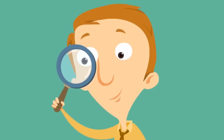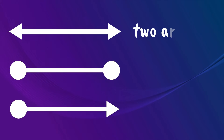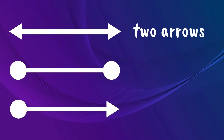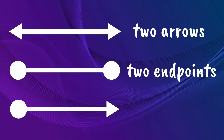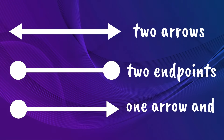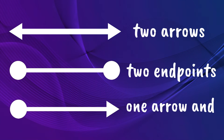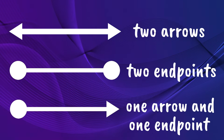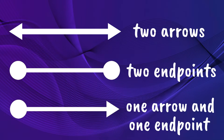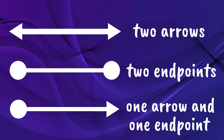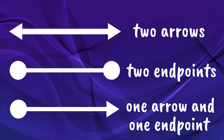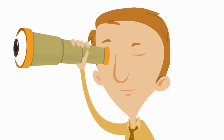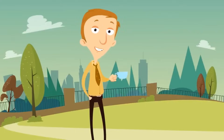We already know that a line has two arrows, a line segment has two endpoints, and a ray has one arrow and one endpoint.